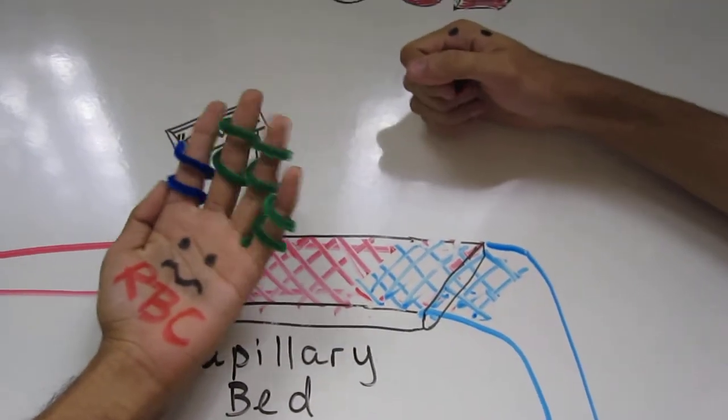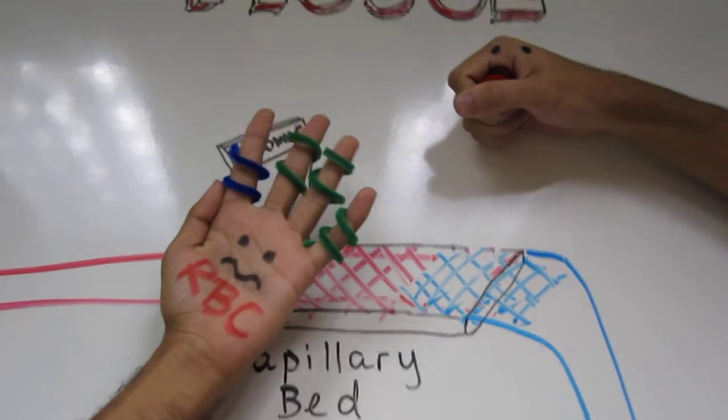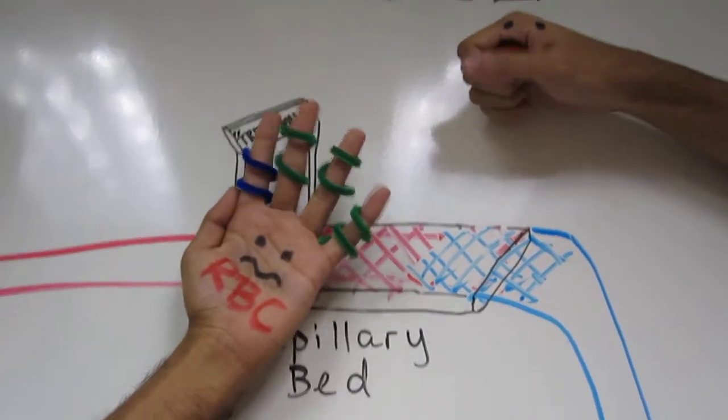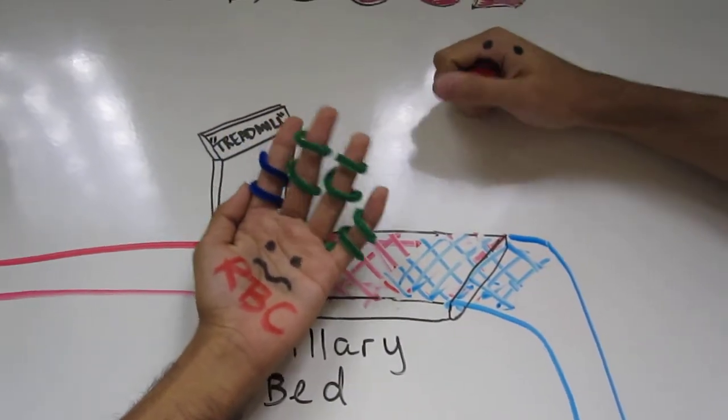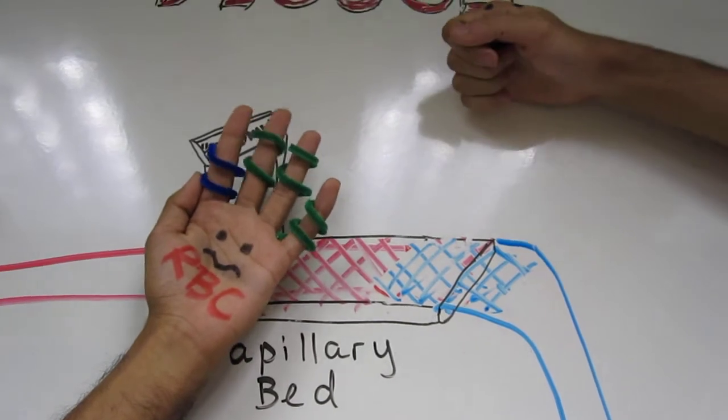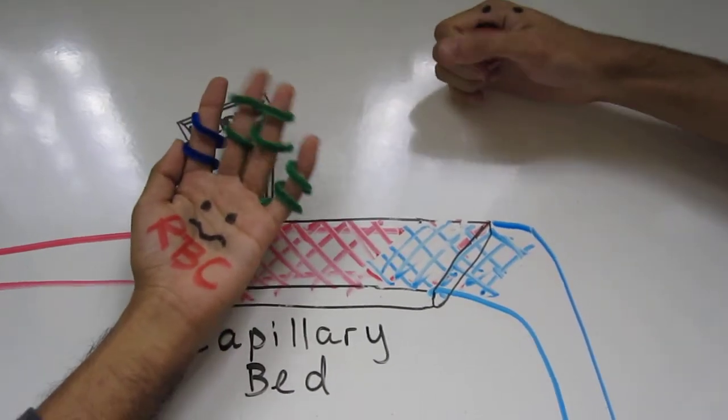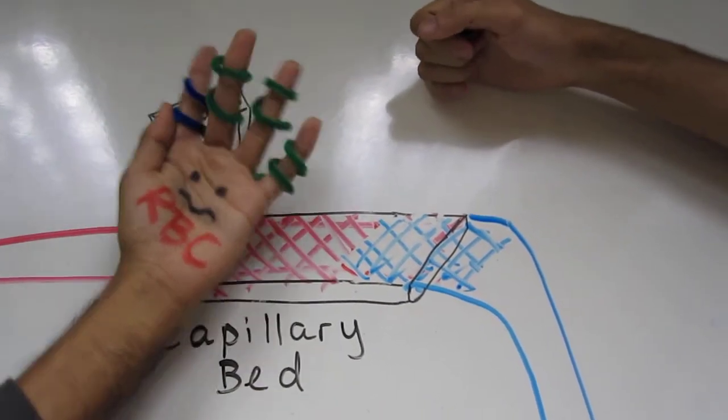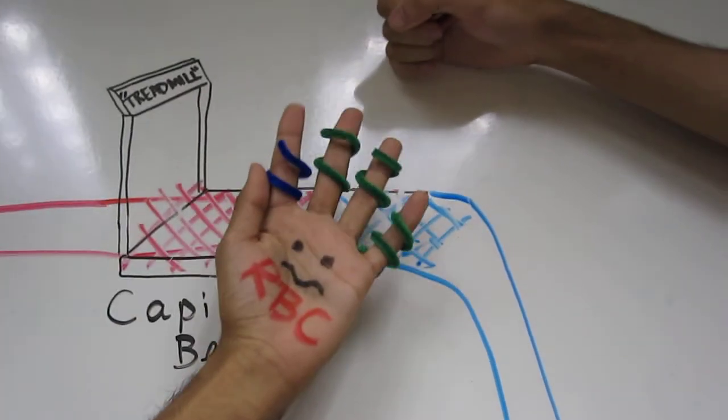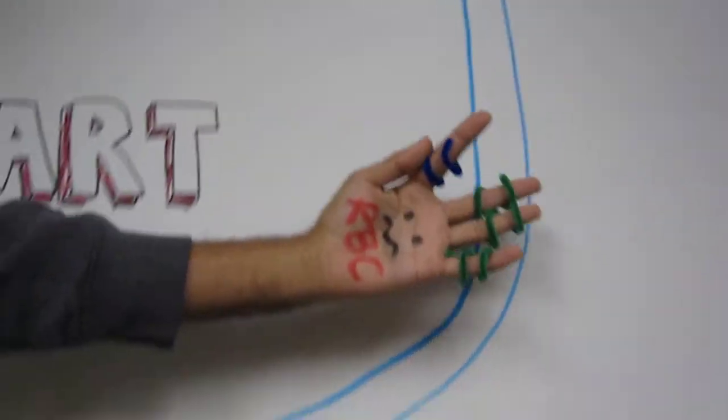The chemoreceptors are located in the carotid and aortic bodies which sense the concentrations of oxygen and carbon dioxide. If adequate oxygen isn't being supplied to the body, especially the brain, the body will respond by increasing cardiac output and ventilation rate in an attempt to deliver more oxygen to the tissues.